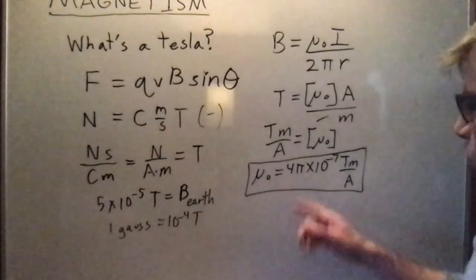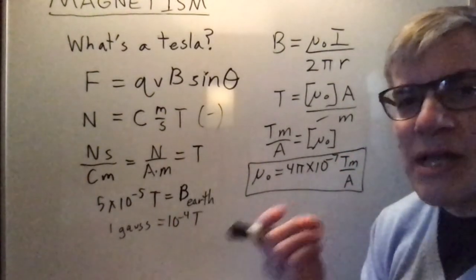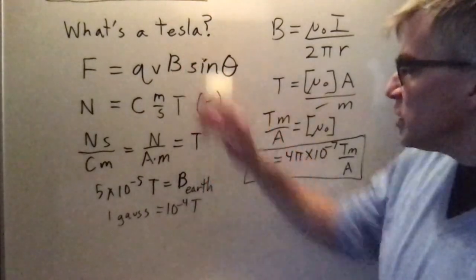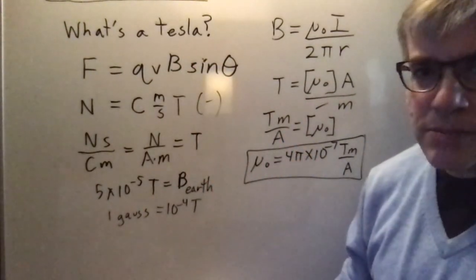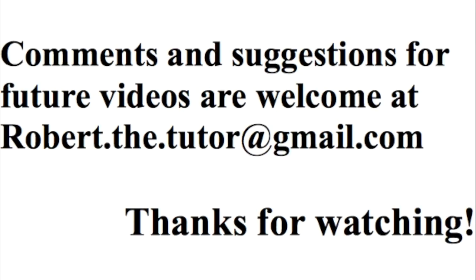So you might say, well why is it exactly four pi times ten to the minus seven? It turns out we defined an ampere so that would work. So that's the really basics of what a Tesla is and what mu naught is.